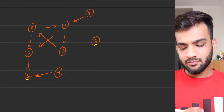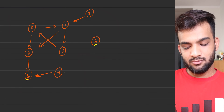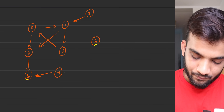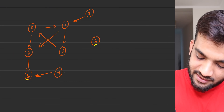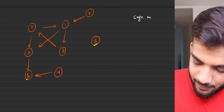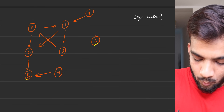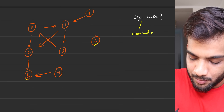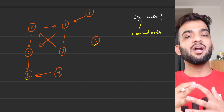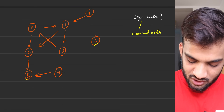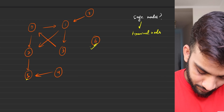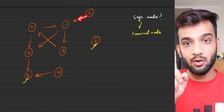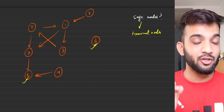Let's look at this particular graph. Which are the safe nodes? All terminal nodes are definitely safe nodes because they have no outgoing edges. For example, six is a safe node, five is a safe node. Is seven a safe node? It still has an outgoing edge, so we need to check.